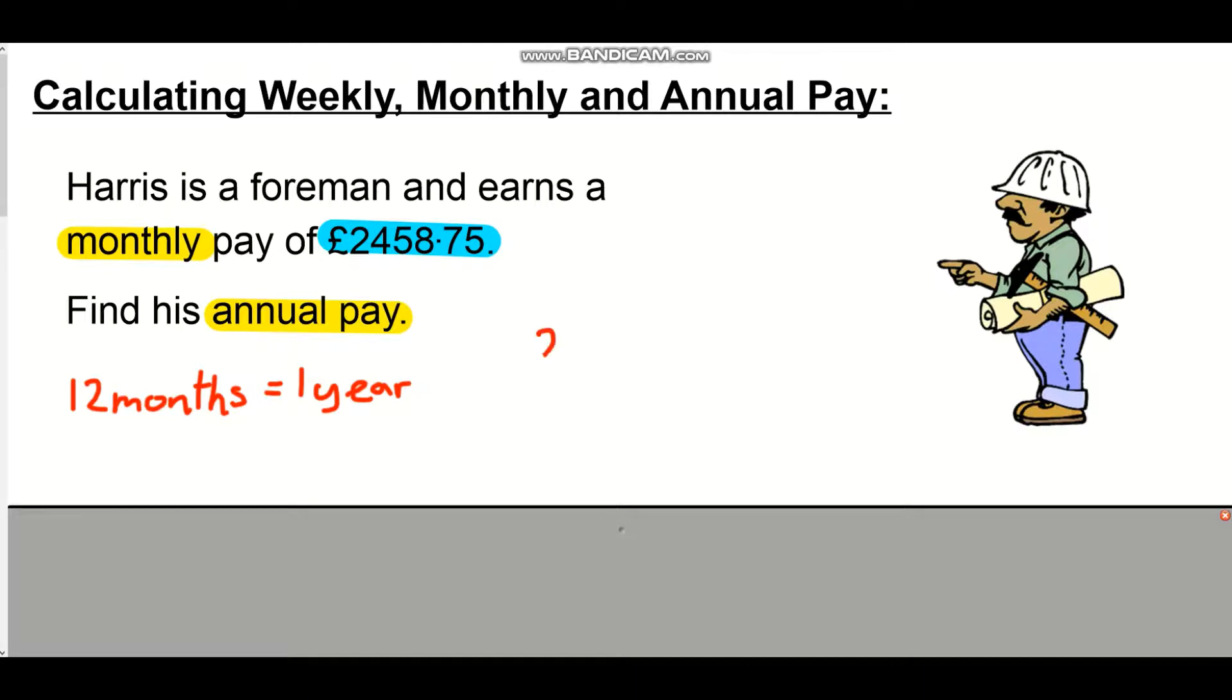All we have to do is figure out what his monthly pay is times by 12. So we're going to do this sum here: 2458.75 times 12. Because you can use a calculator for this, we can just go straight to the final answer. We don't have to do any chimney sums or anything. And we get a final answer of £29,505, and that's how much Harris will make in a whole year.